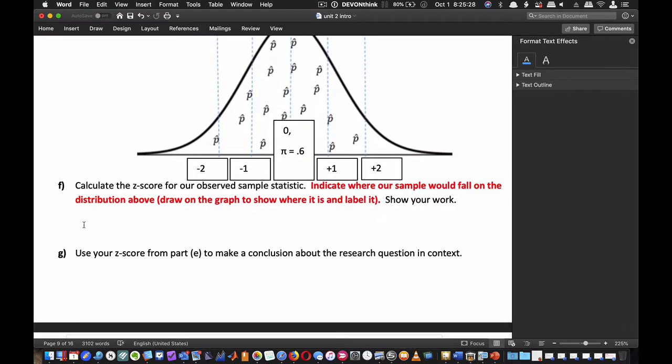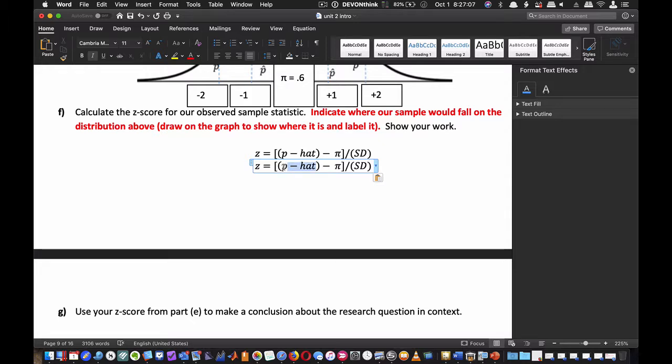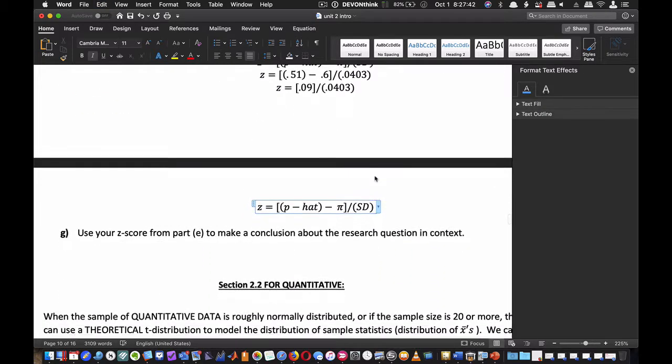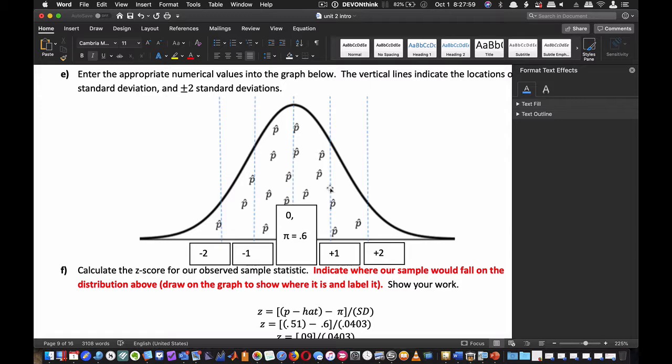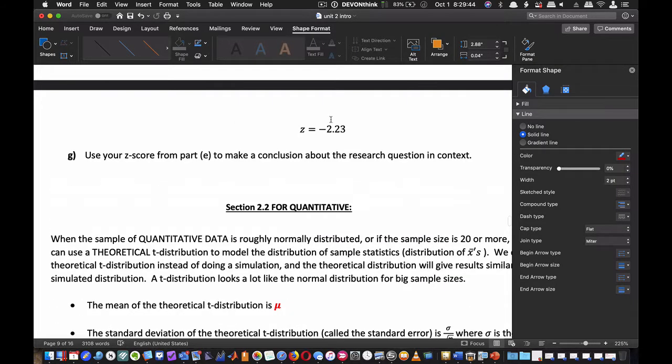Part F: Calculate the z-score for your observed sample statistic. z = (p̂ - π) / SD = (0.51 - 0.6) / 0.0403 = -0.09 / 0.0403 = -2.23. That's on the left-hand side because we're doing a two-tailed test.